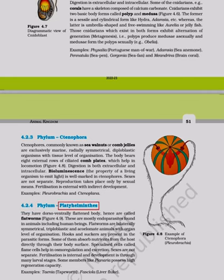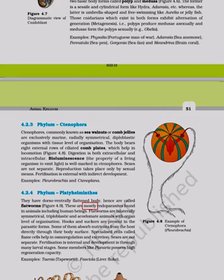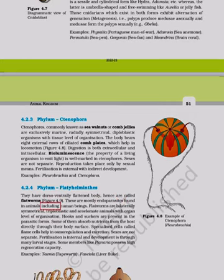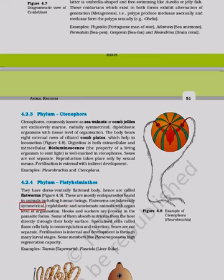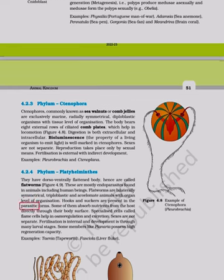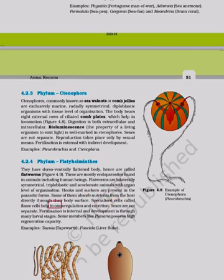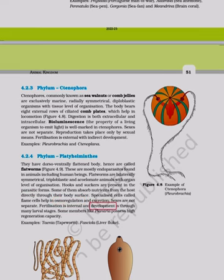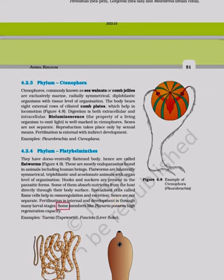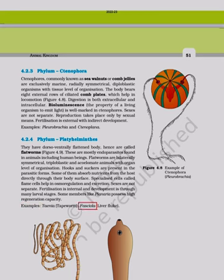Phylum Platyhelminthes: They have a dorso-ventrally flattened body, hence called flatworms. Mostly endoparasites found in animals including humans. They are bilaterally symmetrical, triploblastic, and acoelomate with organ level of organization. Hooks and suckers are present in parasitic forms. Specialized cells called flame cells help in osmoregulation and excretion. Sexes are not separate; fertilization is internal; development is through many larval stages. Some members like Planaria possess high regenerative capacity. Examples: Taenia (tapeworm), Fasciola (liver fluke).